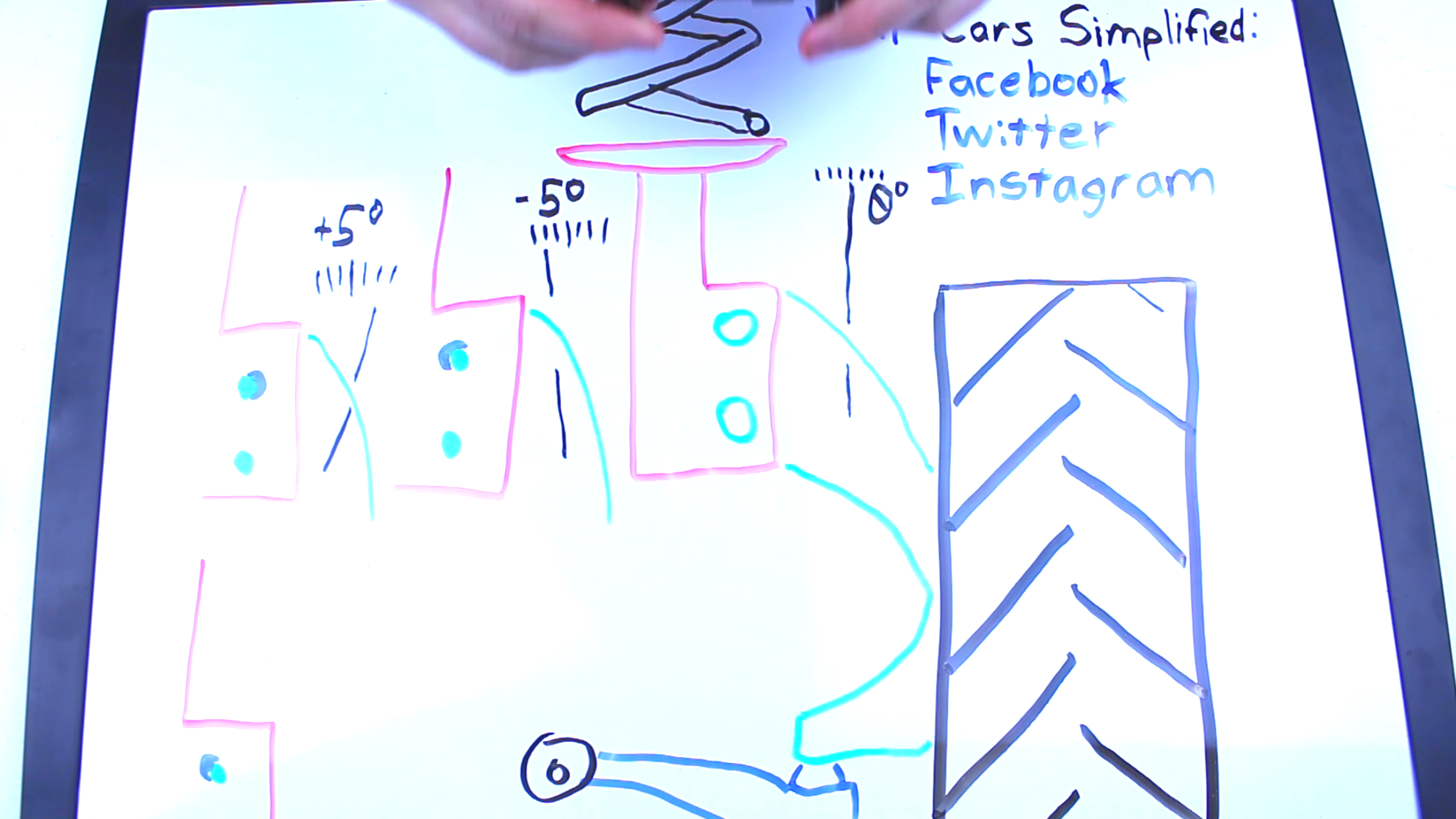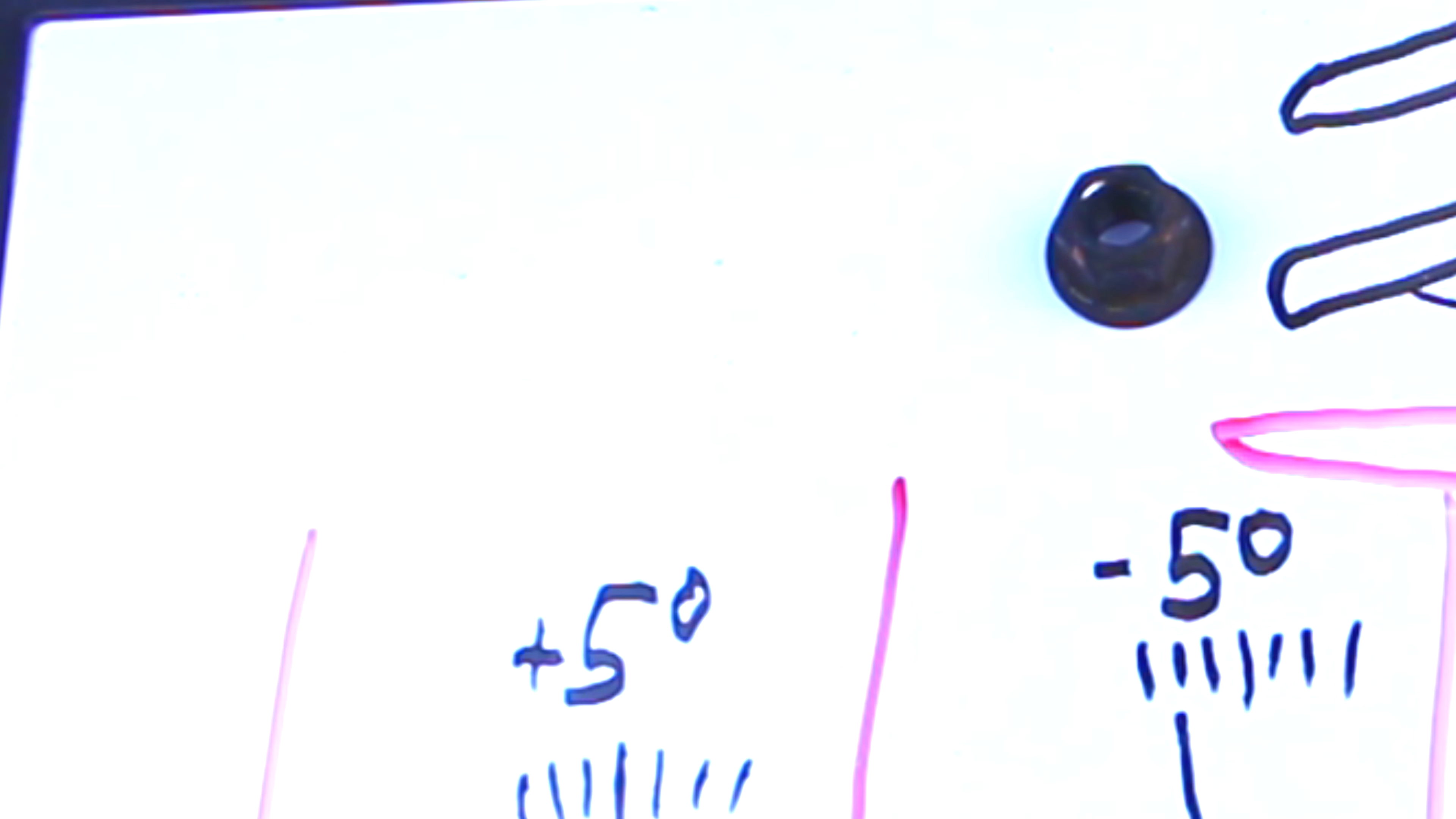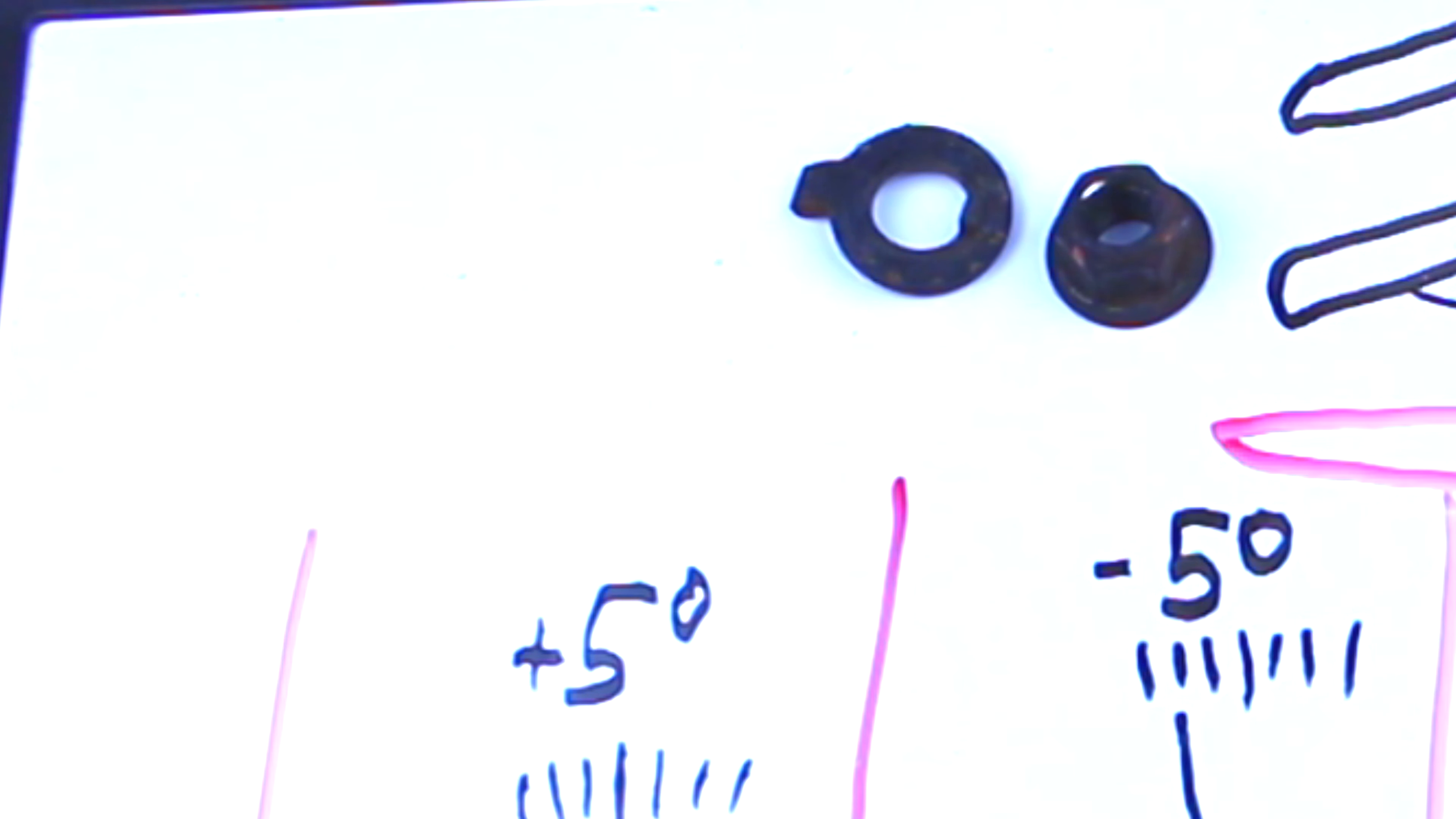So what most people end up going with is a cam bolt like this. What you get here is a basic nut, a special washer, and the bolt itself.